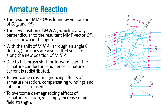The armature field vector OFA and the main field vector OF are shown. To find the resultant field, we take the vector sum of OF and OFA. The new position of the magnetic neutral axis (MNA), which is always perpendicular to the resultant MMF vector, is as indicated in the diagram. With the shift of the magnetic neutral axis through an angle theta, the brushes also need to be shifted by angle theta so as to lie along the new position of the magnetic neutral axis.